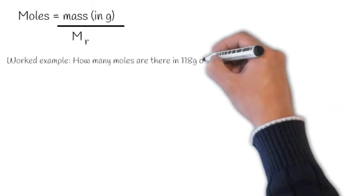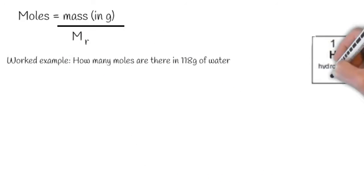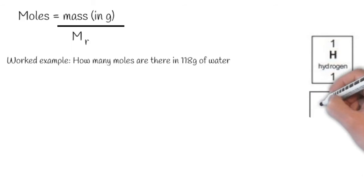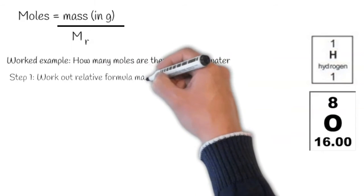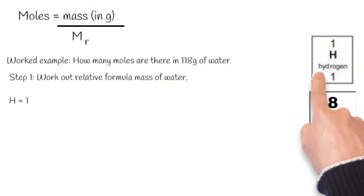Let's do a worked example. How many moles are there in 118 grams of water? We know that water is made up of H2O. So to step one, we need to work out the relative formula mass of water.